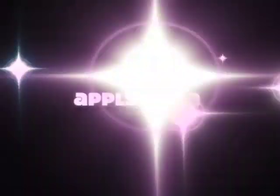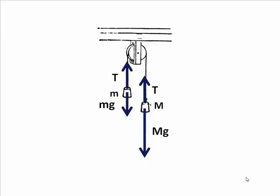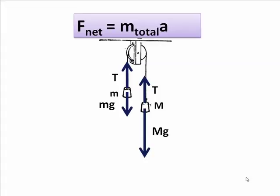Now we will apply F net equals Ma to the big picture, to the whole system. And we'll look at both masses moving together as a unit connected by the string. And once again, we need to find F net equals Ma. Now one force, Mg, is pulling down. It's larger. It is opposed by a smaller force pulling down little Mg. And so we say big Mg minus little Mg equals Ma.